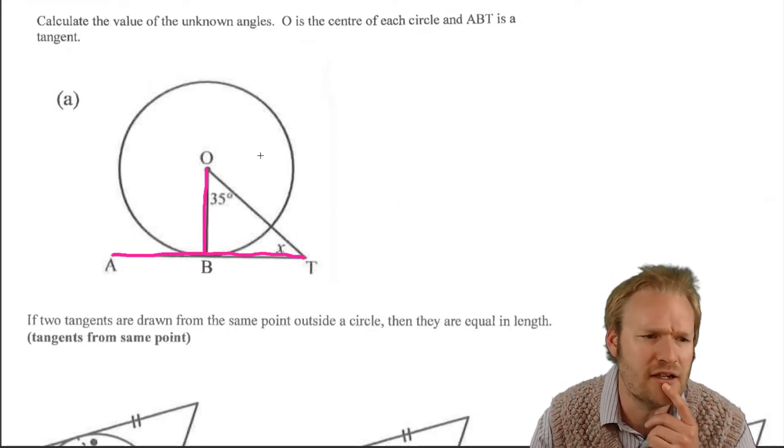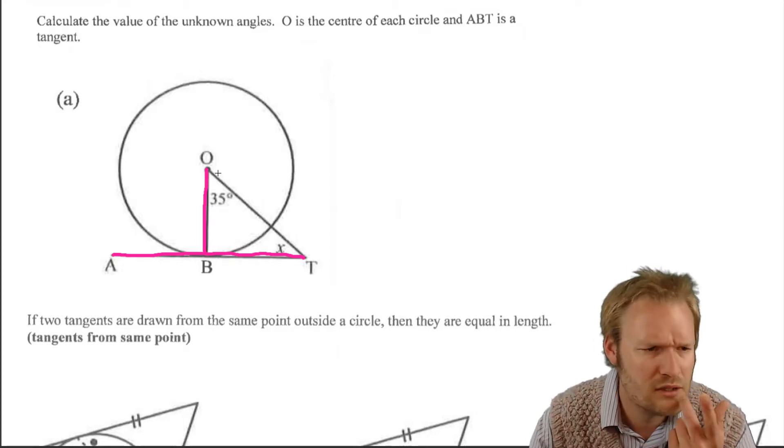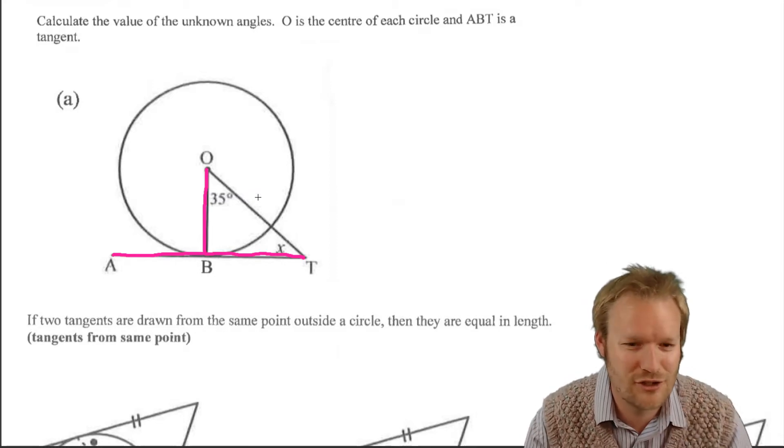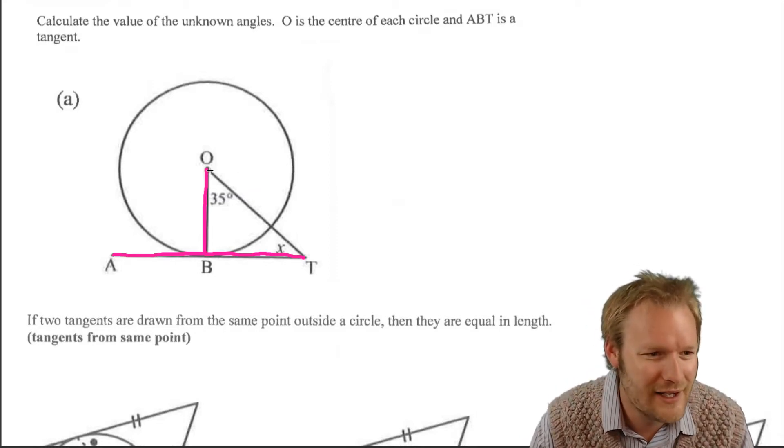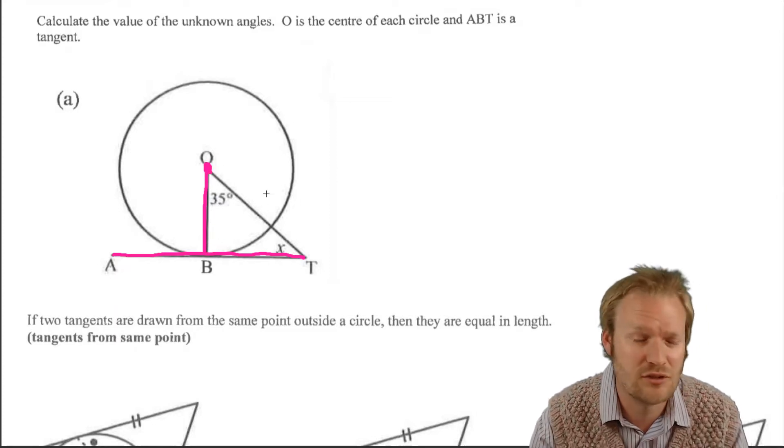Now, it doesn't tell us it's a radius. How do we know that OB is a radius? Well, yeah, as I keep on saying, I'm interested in seeing what you're going to say because I really am. Well, O is the center, and the line from the center to the circumference is always a radius.